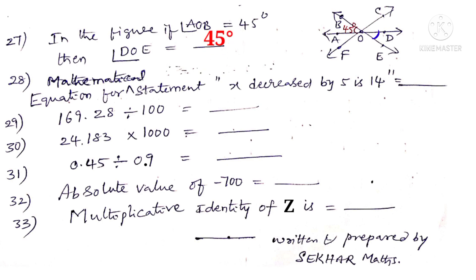Now 28th. Equation for mathematical statement. X decreased by 5 is 14. Observe that first X. So write X. Decreased by 5 indicates minus 5. Is 14 indicates equal to 14. So X minus 5 is equal to 14 is the equation.